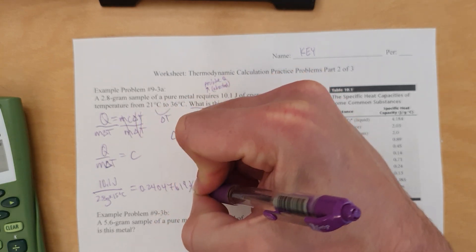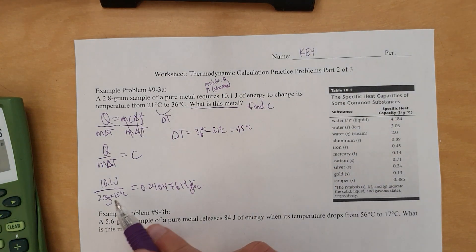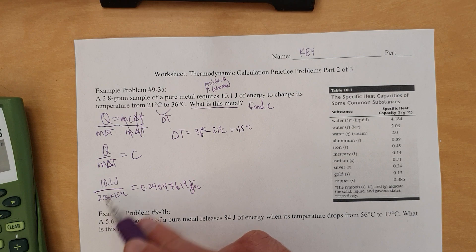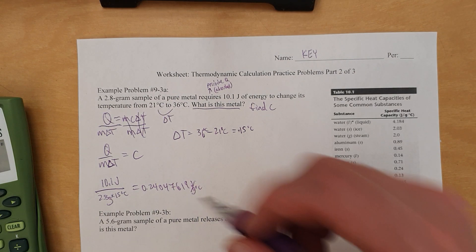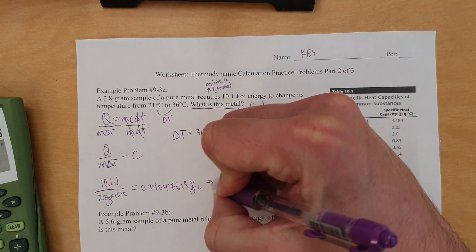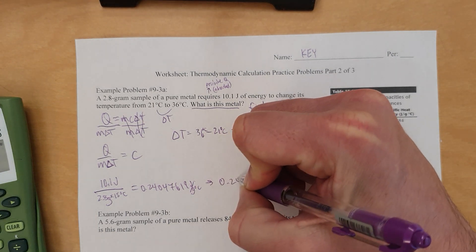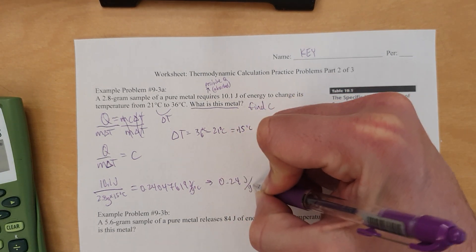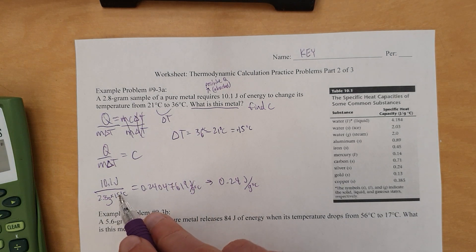0.24047619 joule per gram degree Celsius. Ignore sig figs for temperature, but this is 2 and this is 3 sig figs, so round to 2 sig figs. So that would be 0.24 joule per gram degree Celsius. Round to 2 sig figs because of this.